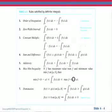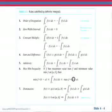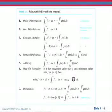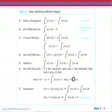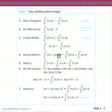Here are some rules. The order of integration: if I have the integral from b to a of f of x, that is the opposite of the integral from a to b. The integral from a to a has a zero width, so its integral is zero. The constant multiple rule tells us that the integral from a to b of k times f of x dx is k times the integral from a to b of f of x dx. The second part is just a special case where k is negative 1. The sums and differences of integrals are equal to the individual integrals added or subtracted.